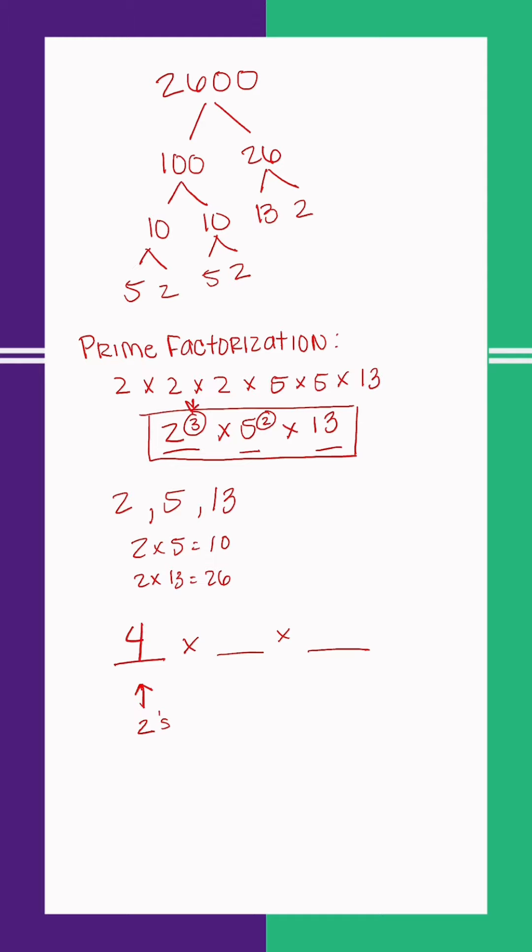So that's 4 different possible combinations of 2s. For my 5s, I could have 0 5s, 1 5, or 2 5s. That gives me 3 different possible combinations.